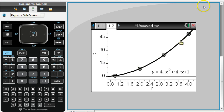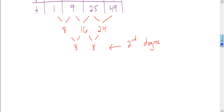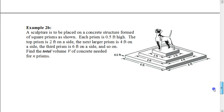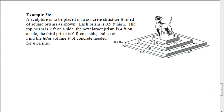Now I want you to try one on your own. A sculpture is to be placed in a concrete structure formed of square prisms. Each prism is 0.5 feet tall. The top prism is 2 feet on each side, the next is 4 feet on each side, the third is 6 feet on each side, and so on — so the pattern goes 2, 4, 6, then 8 by 8, then 10 by 10. We want to find the total volume of concrete needed for n prisms.